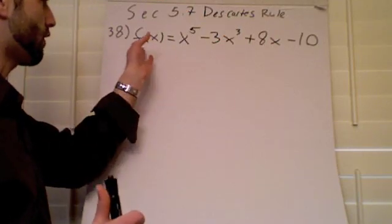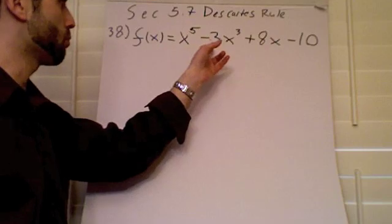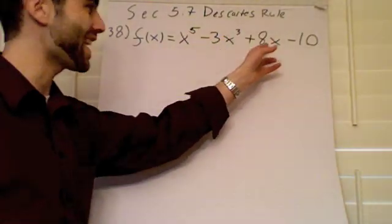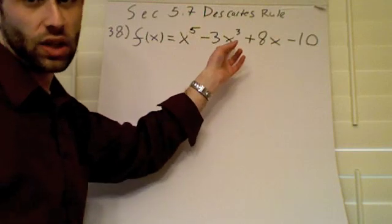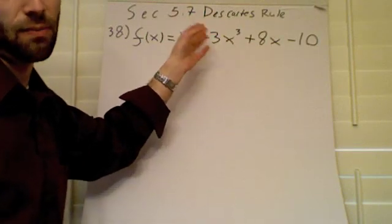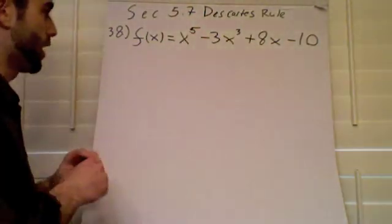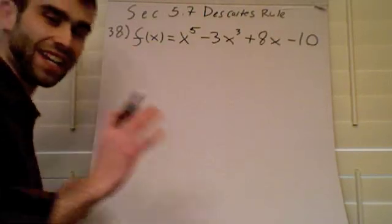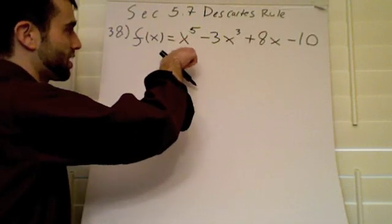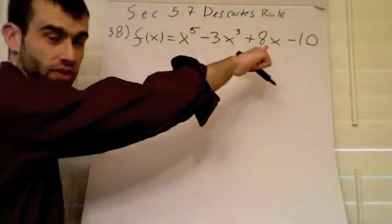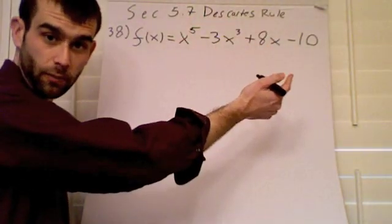If we look, we have a function. Function f of x is equal to x to the 5th minus 3x cubed plus 8x minus 10. Now what we're going to do is look at two things. First is the sign changes when we have the f of x. That means what happens to the sign in front of each of these terms? Does it change between one to the other?